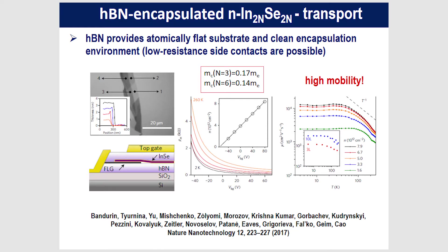We do get good mobility for a 2D semiconductor — around 10^4 cm²/Vs for a six-layer device — a large magnitude better than what you normally get with transition metal dichalcogenides. This highlights the importance of encapsulation for device properties, and the light effective mass is one contributing factor to achieving high mobility.